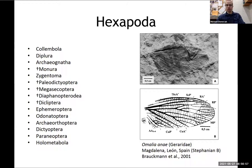And finally the Neoptera — insects that can fold their wings over their backs. These include ancestors of Orthoptera like grasshoppers, the Dictyoptera including roaches, and also importantly the Holometabola: insects that go through complete metamorphosis. These started to appear in the Pennsylvanian.